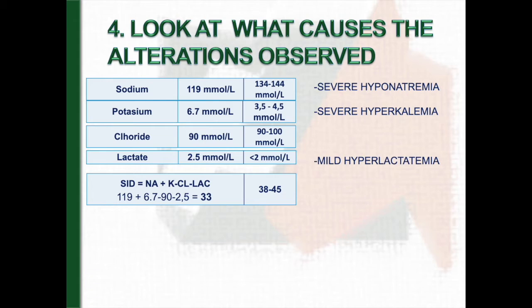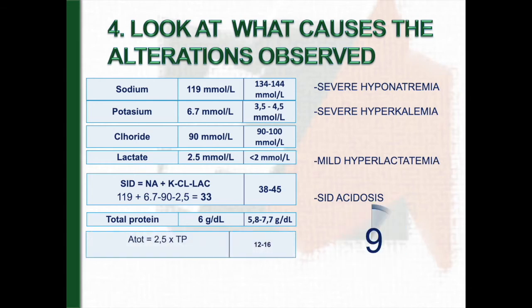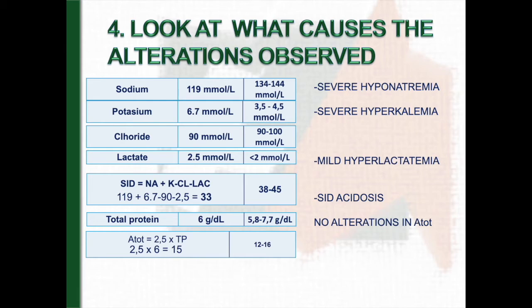And on the other hand, we can also calculate the A-tot. There is no significant alteration in A-tot. Therefore, the foal has metabolic acidosis due to decrease in strong ion difference with slight increase in lactate, and the main cause of this acidosis is the decrease in sodium levels.